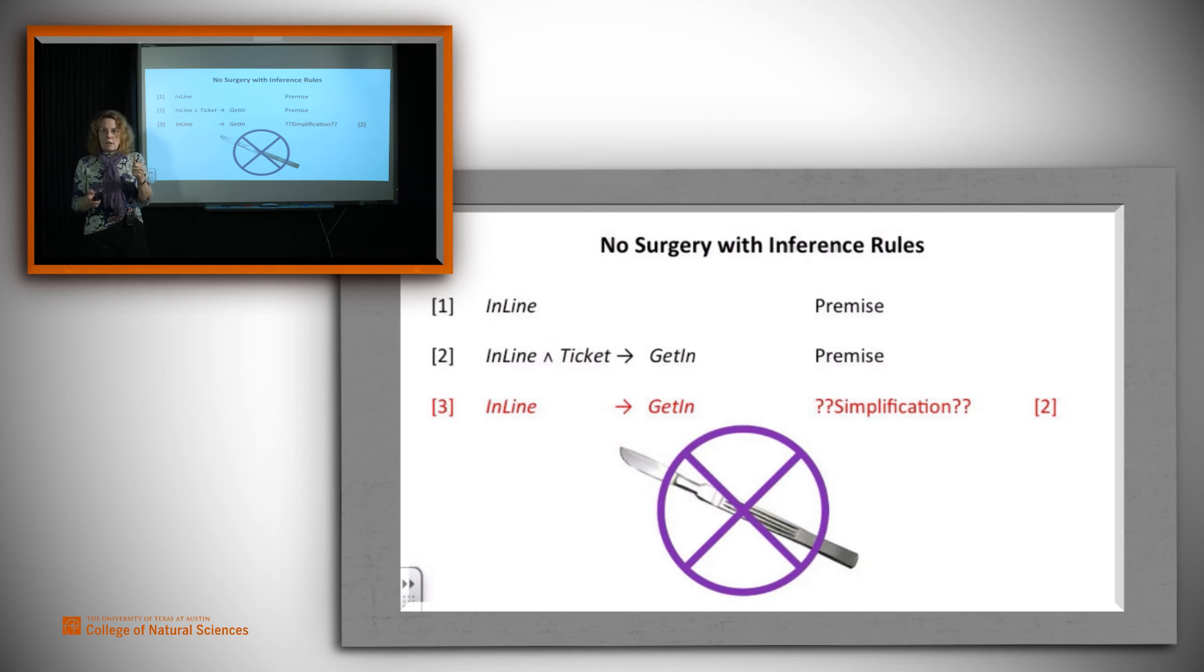But what went wrong? In a nutshell, you can't do surgery with inference rules. You can do it with identities, but not with inference rules, inside an assertion. So it's not okay to claim that if in line and ticket gets you in, then in line alone gets you in. It is sufficient to say, if in line and ticket are both true, then in line is true. But you can't do it down inside an expression like that. If you do, you'll get conclusions that don't follow from the premise.